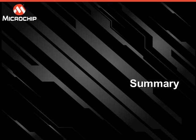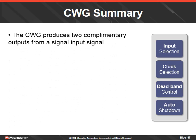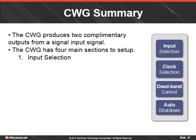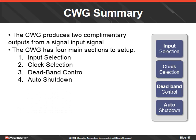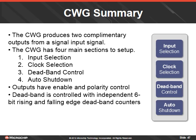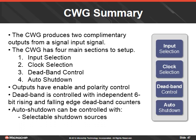The CWG produces two complementary outputs from a single input signal. The CWG has four main sections to set up: the input selection, the clock selection, the deadband control, and the auto shutdown. Outputs have enable and polarity control. Deadband is controlled with independent 6-bit rising and falling edge deadband counters. Auto shutdown is controlled with selectable shutdown sources, auto restart enable, and auto shutdown pin override control.